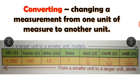Converting means changing a measurement from one unit to another. When you convert from a smaller unit to a larger unit, you divide. When you convert from a larger unit to a smaller unit, you multiply. For example, converting liters to milliliters requires multiplication, but converting liters to kiloliters requires division.